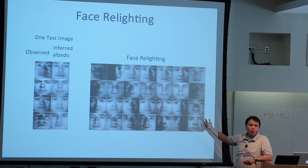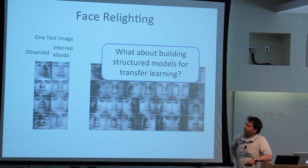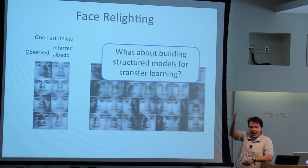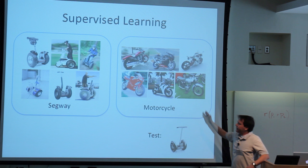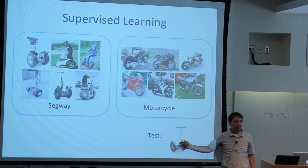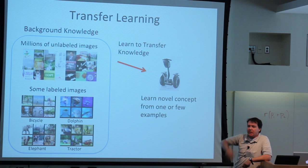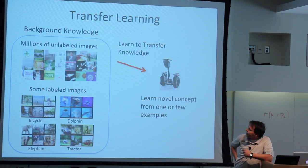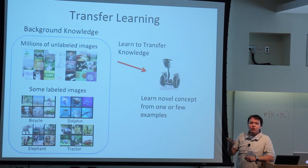These models work fairly well compared to standard models. There's also an interesting question in the deep learning community: how do you know that the representations you're learning are meaningful? One way is to see whether they can be used for other tasks — learning new classes. Rather than just training on thousands of labeled images of Segways or motorcycles, what if you have millions of unlabeled images, some labeled examples, and want to build representations that allow you to quickly learn new classes? That's the problem of transfer learning.